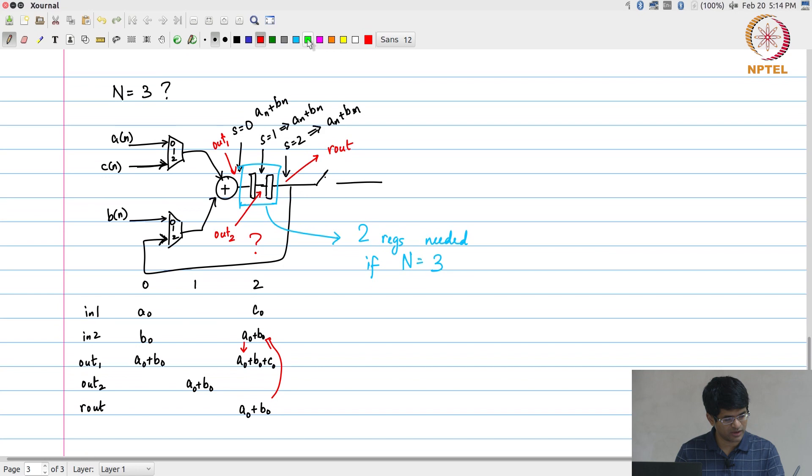What happens over here I really do not care what these values are because I am never going to use them. So, clearly, two parts to this: one is functionally this is correct because I have made sure that the a 0 plus b 0 as well as the c 0 came at the correct instants of time so that the computation happens properly.